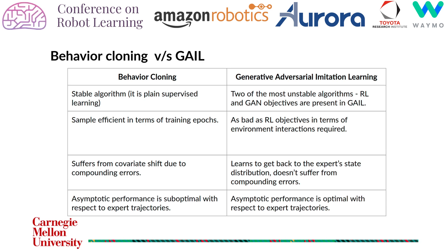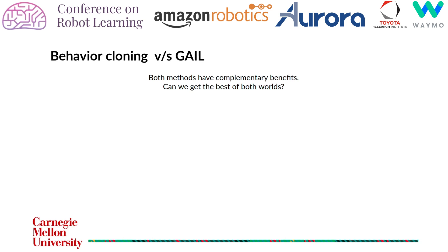Finally, behavior cloning requires a lot of expert trajectories to achieve optimal performance, but GAIL can achieve asymptotic performance with very few expert trajectories. So, behavior cloning and GAIL seem to have complementary benefits. Can we get the best of both worlds?